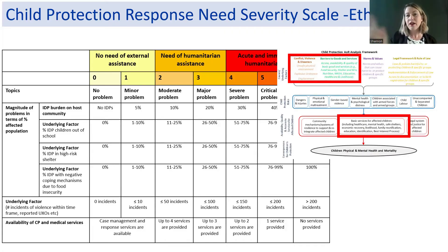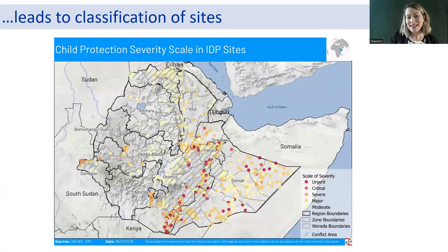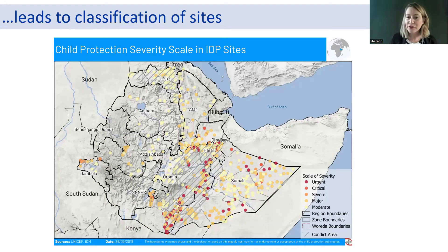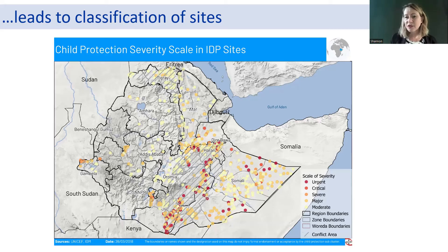These indicators correspond to the underlying factors and basic services shown in the framework. It might look complicated but it's all done in Excel — we don't have fancy software in emergency settings. The output is a map that shows which locations we really need to prioritize for child protection response services, and it also helps operational actors figure out where to set up sub-bases and assess distances and potential barriers to accessing the sites.